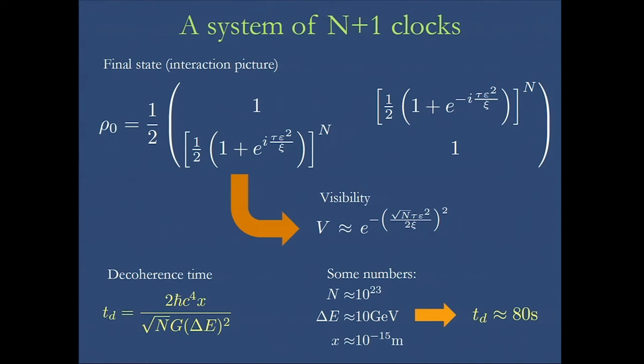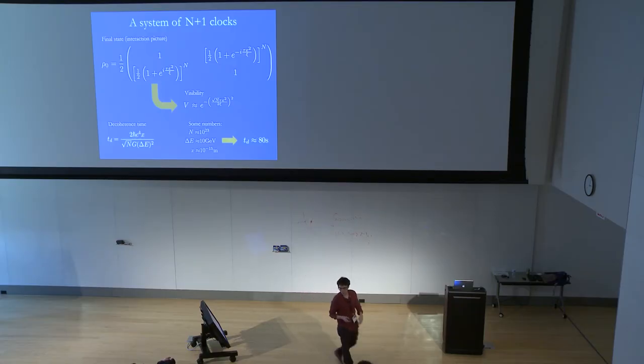In order to keep track of how we lose coherence, we compute the visibility and we say that when the visibility drops to 1 over e, then the clock is no longer a good clock.